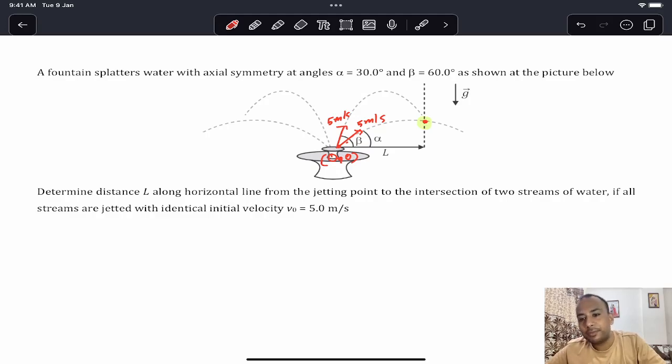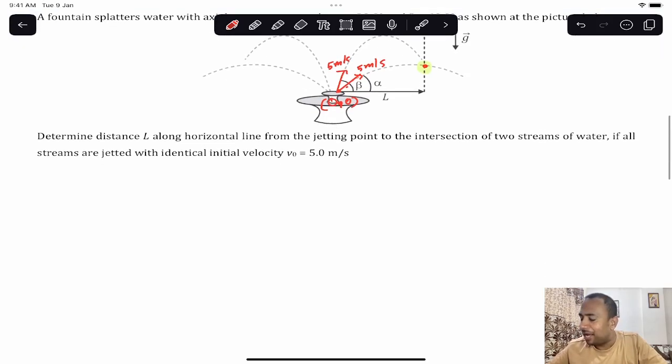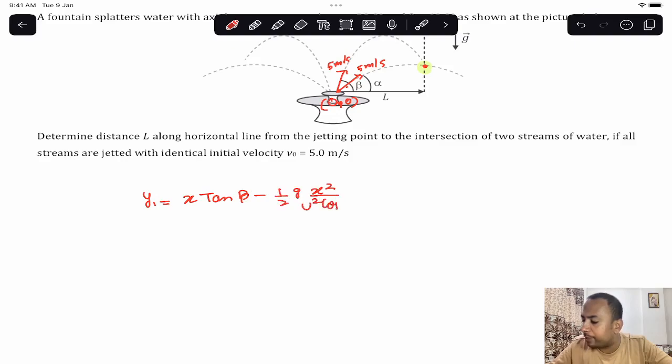Keeping this in mind, we can simply equate the trajectories. One trajectory will form - you've learned that in ground to ground projectile motion, the trajectory equation is: y1 equals x tan theta minus half g times x squared divided by u squared cos squared beta.